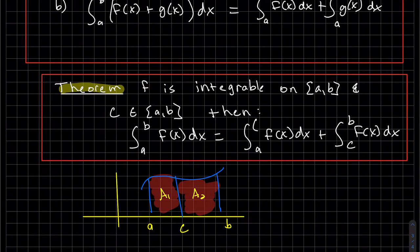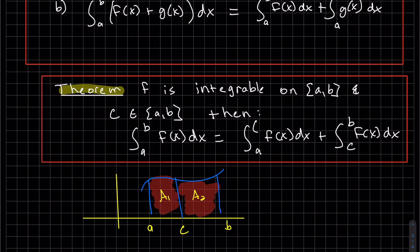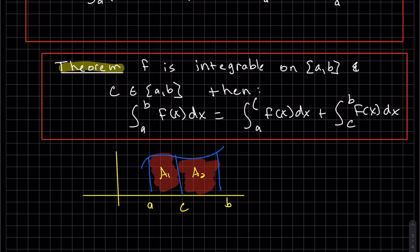This works for net area also. I'm just doing an example where they're both positive. We can see here, this would be my area one from A to C, and this would be my area two from C to B.